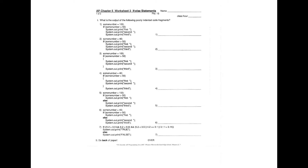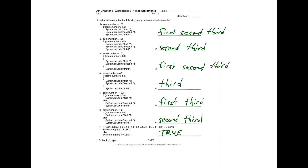Looking at the next set: someNumber equals 100. If someNumber is greater than 50, it prints 'first.' With no brackets, only the first line belongs to the if statement — 'second' and 'third' print regardless. For example two, 40 is not greater than 50, so 'first' doesn't print, but with no brackets 'second' and 'third' still print — it doesn't matter where the code is indented.